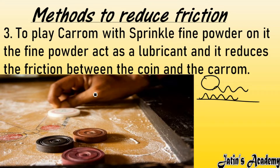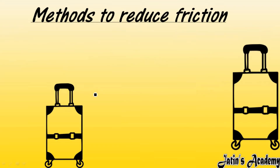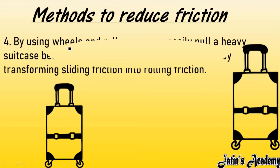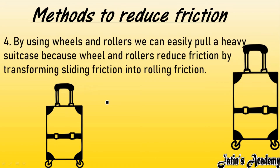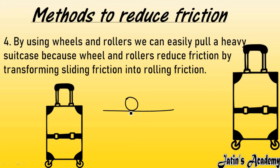The next method to reduce friction is by using wheels and rollers. We can easily pull a heavy suitcase when it has wheels and rollers. During rolling, there is less contact between the object and the surface. Due to less contact, there is less interlocking, and due to less interlocking, there will be less friction.